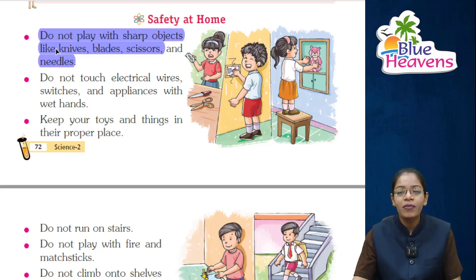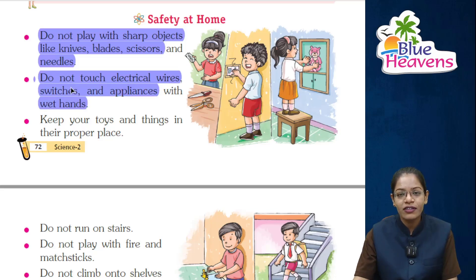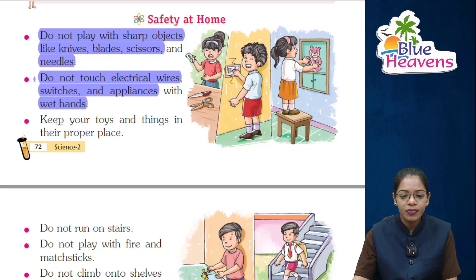Do not touch electric wires, switches, and appliances with wet hands. Children, never touch electric sockets or electrical appliances with wet hands as it can cause electric shock. Always keep your toys and things in their proper place.